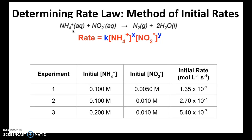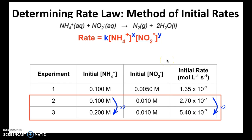The rate orders must be determined experimentally. With the method of initial rates, you use ideas behind systems of equations to eliminate variables. For example, to find x — the rate order with respect to NH₄⁺ — you find two experiments where the concentration of ammonium changes but the concentration of the other reactants stays the same. That way, the variable y cancels out.